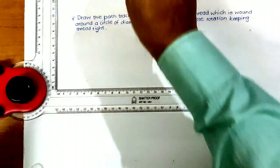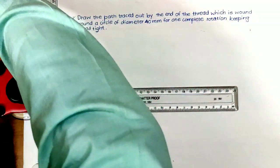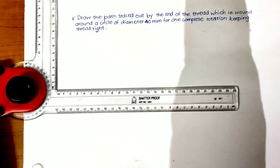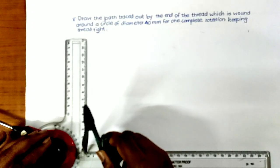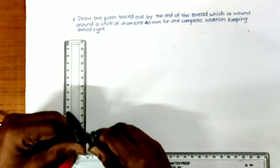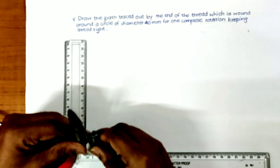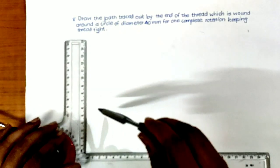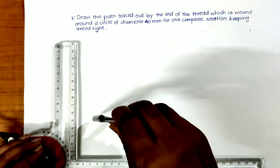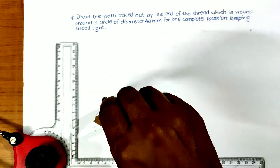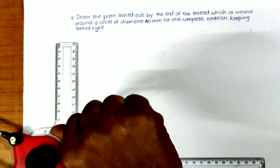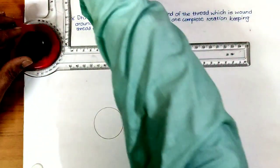First of all draw a circle of given diameter. Given diameter is 40 mm therefore radius size is 20 mm. After drawing a circle.